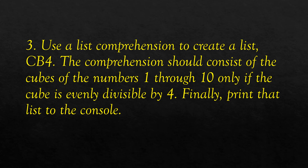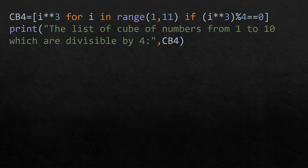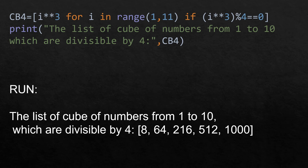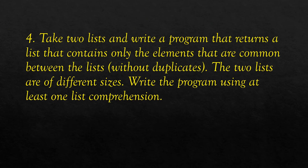The third program is to create a list comprehension named cb4 consisting of cubes of numbers one through ten, only if the cube is evenly divisible by four, then print that list. The comprehension stores i to the power three for i in range one to eleven if i to the power three is divisible by four. Running the program shows the list of cubes from one to ten divisible by four are: 8, 64, 216, 512, 1000.